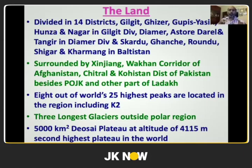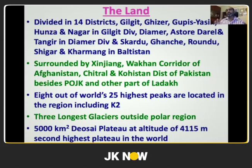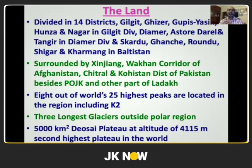Eight out of the world's 25 highest peaks are located in this region, including K2 Godwin-Austin, the second highest peak in the world. It is regrettable that Indian textbooks say the highest Indian peak is Kangchenjunga — as if K2 does not belong to us. The highest peak on Indian territory is actually K2 Godwin-Austin. Three longest glaciers outside the polar region are here. The 5,000 square kilometer Deosai Plateau at an altitude of 4,115 meters is the second highest plateau in the world.